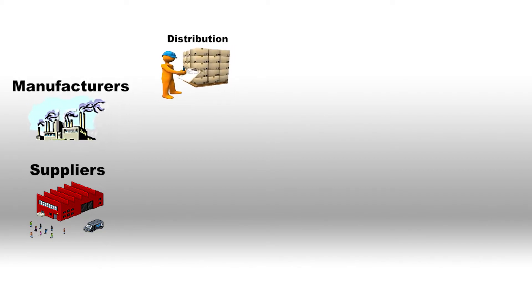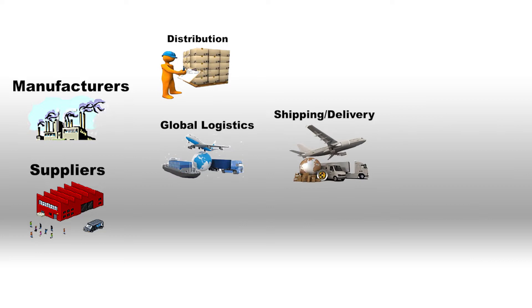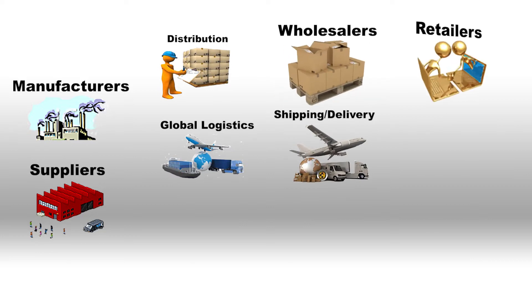The modern supply chain is composed of several different elements that need to work together efficiently and effectively in order to move from raw materials to finished goods that can be sold to meet the demands of customers. Major elements of supply chain include supplier materials and parts, manufacturers, distribution and warehousing, global logistics, shipping and delivery, wholesalers and retailers.